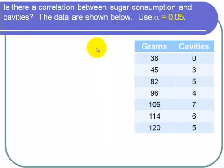I want to perform a hypothesis test for the correlation. For my null hypothesis, that says that there is no correlation between grams and cavities. If there is no correlation, that means that the population correlation, which I call rho, is equal to 0.